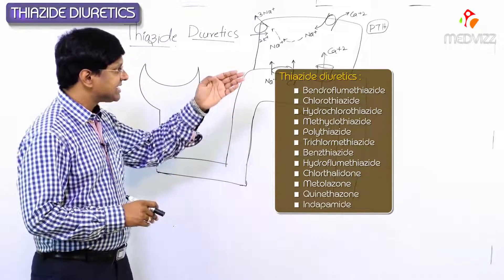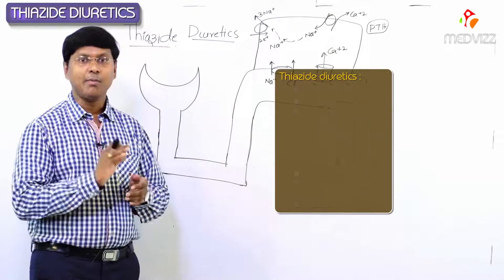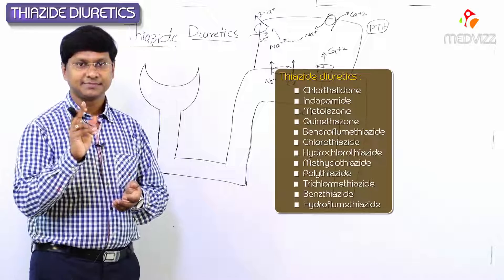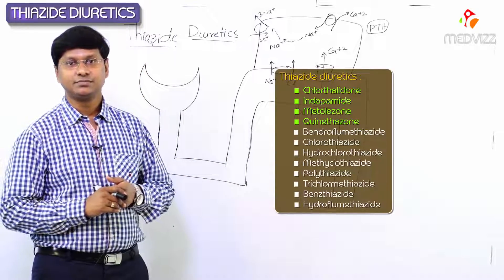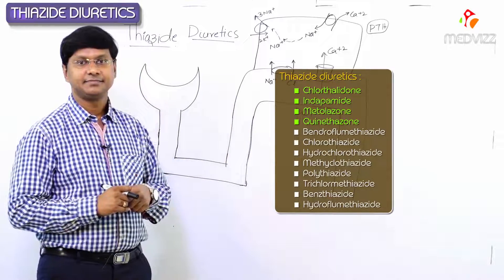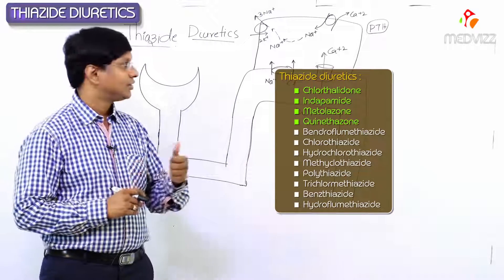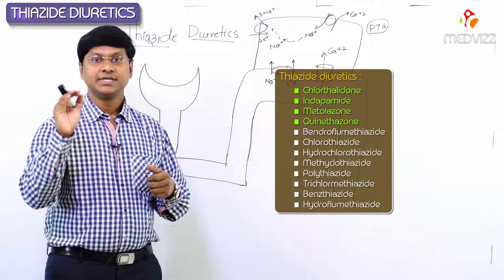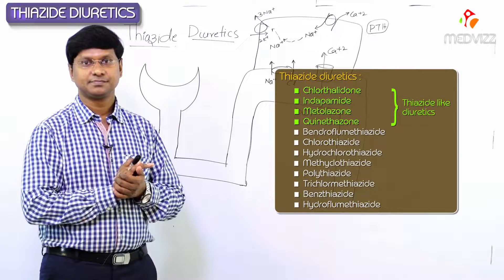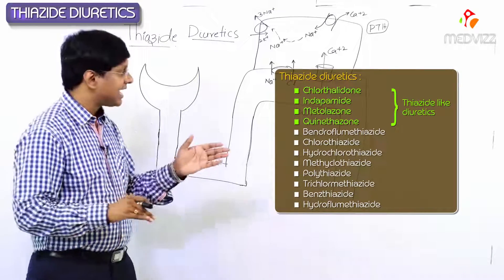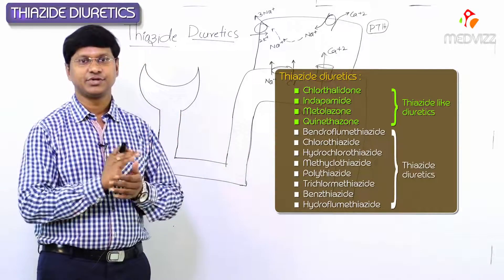So these are the list of your thiazide diuretics. Among these, remember that chlorthalidone, indapamide, metolazone, and quinethazone are the thiazide-like diuretics, whereas the other agents in the group are the thiazides. Remember this point.